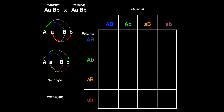The father in this case has exactly the same genotypes for the A gene and B gene — he's heterozygous for both of them. So if I do the same thing for the paternal side, I'm going to get exactly the same result: big A big B, big A little b, little a big B, and little a little b. One of the most important things you can do in a dihybrid cross is make sure you set this up correctly, because if you don't, the rest will probably be wrong.